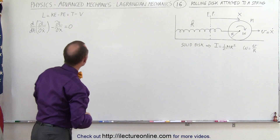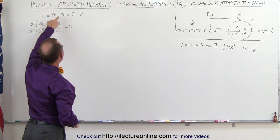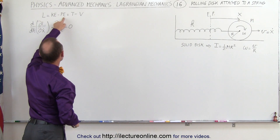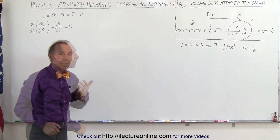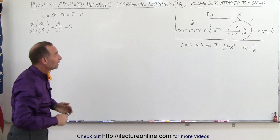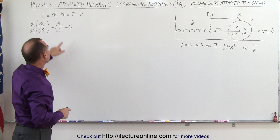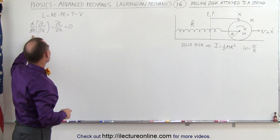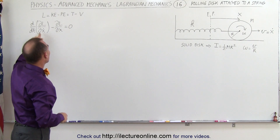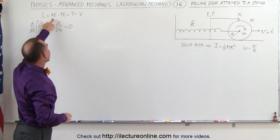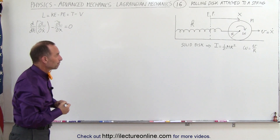The Lagrangian is defined as the kinetic energy minus the potential energy, and this equation will give us the equations of motion. What we need to do is find these individual terms — specifically, the kinetic and the potential energy.